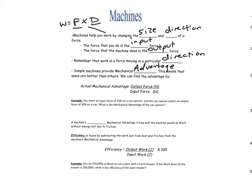How does that machine help us? We have an equation for that called the actual mechanical advantage — 'actual' like actually. The actual mechanical advantage is the output force divided by the input force. We can use our triangle or pyramid again: mechanical advantage equals output force divided by input force.